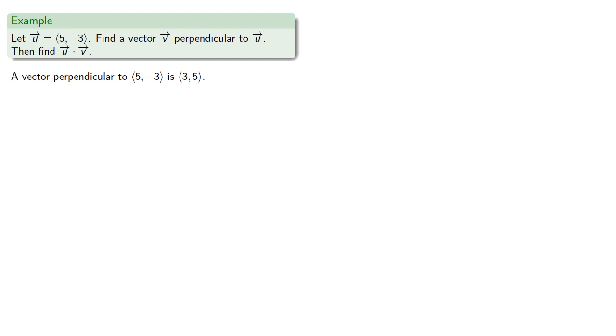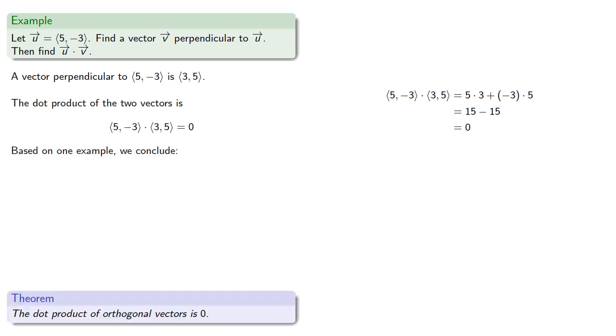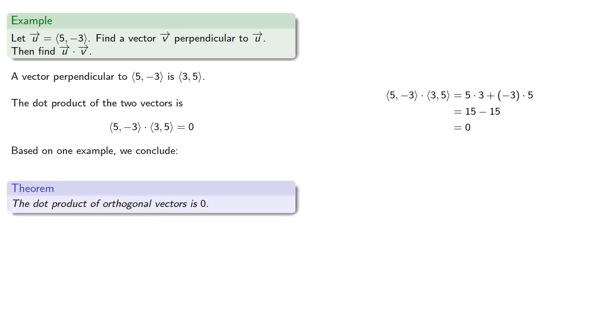Now, if we find the dot product of these two vectors we get. And based on one example, we conclude the dot product of orthogonal vectors is 0.